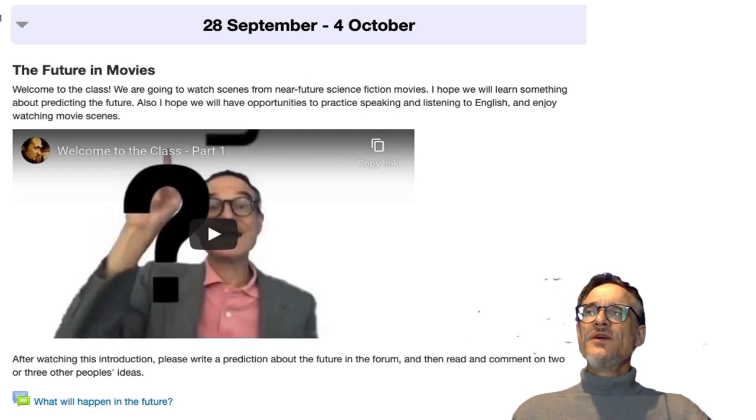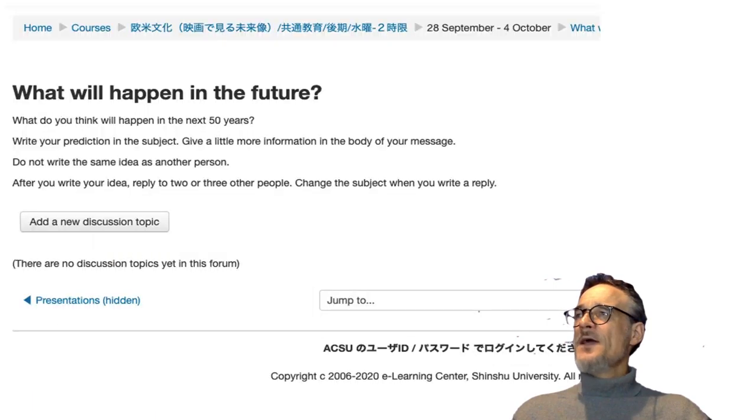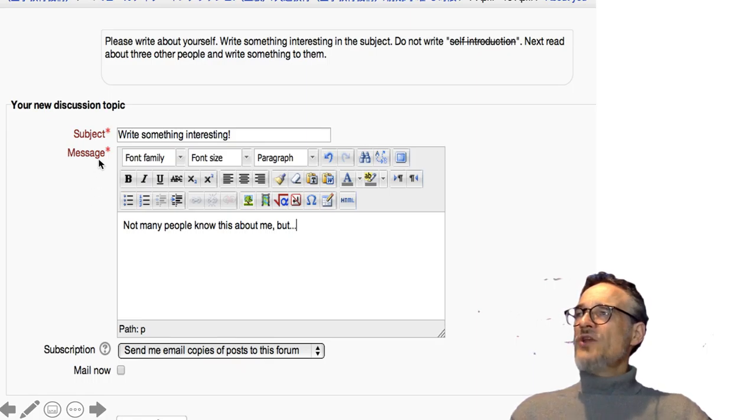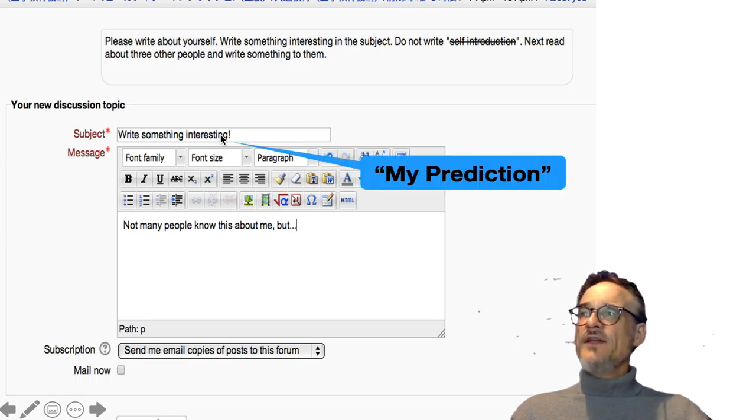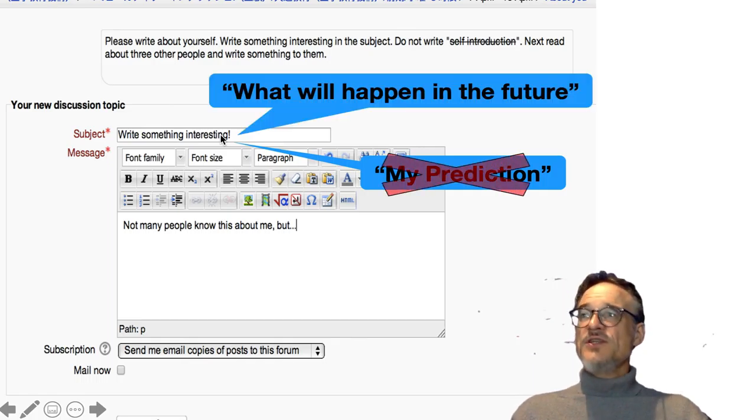If you go to the class, it looks something like this. There's a forum you can see there. And you can add a new discussion topic to the forum. And when you're writing in the discussion, in the topic, you first of all get to write a subject. Please don't write my prediction in the subject. Don't write what will happen in the future.